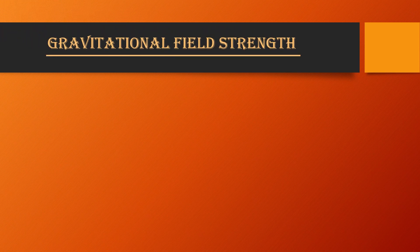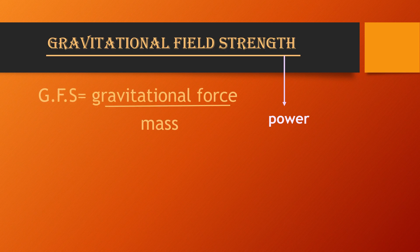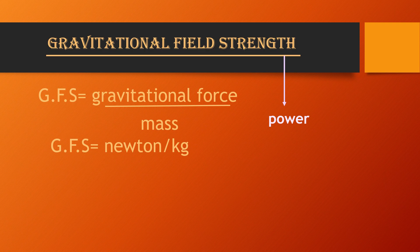Our next definition is Gravitational Field Strength. Strength means power, and gravitational means it is the power of gravitational force. The definition of Gravitational Field Strength is: gravitational force acting per unit mass is called Gravitational Field Strength. We can also calculate the unit using this formula. The unit of gravitational force is Newton and the unit of mass is kg, so the unit becomes Newton per kg.